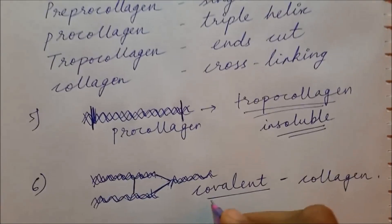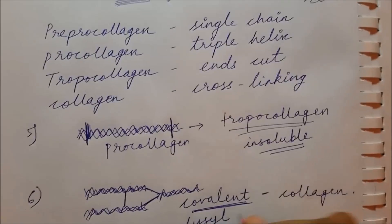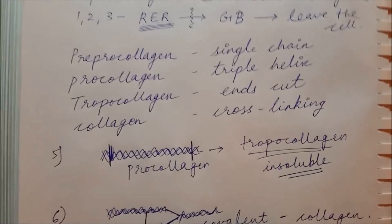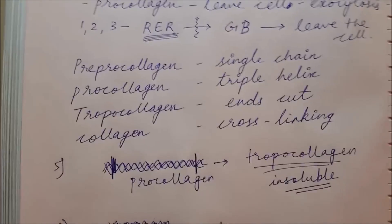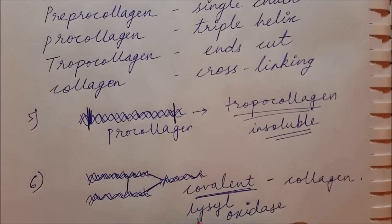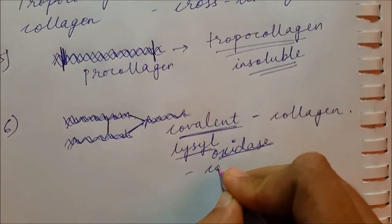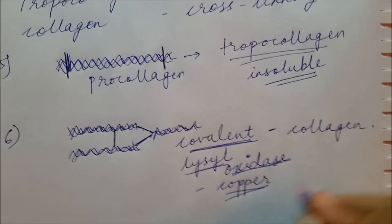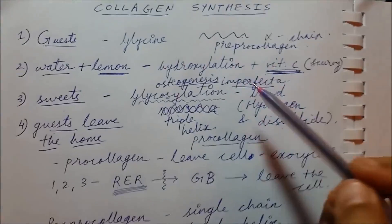To form the covalent bond, the enzyme required is lysyl oxidase — not lysyl hydroxylase, this is a common source of confusion. For lysyl oxidase to work, copper is required. This is a highly tested step.